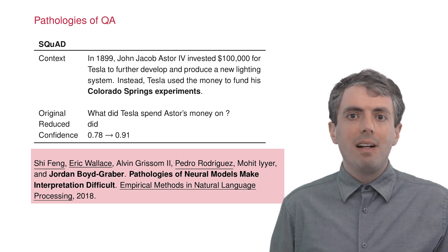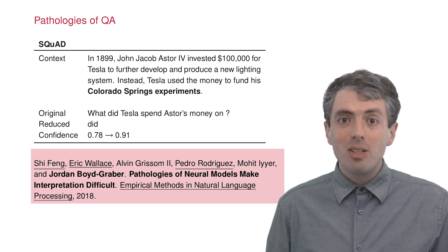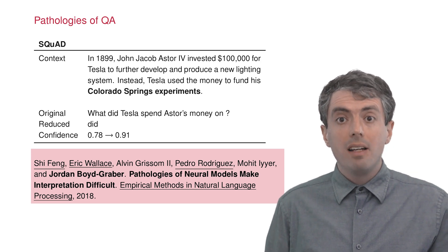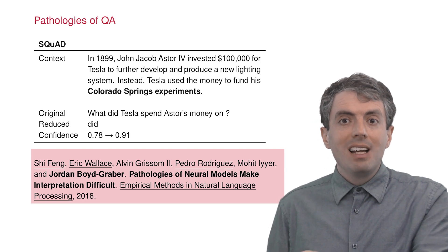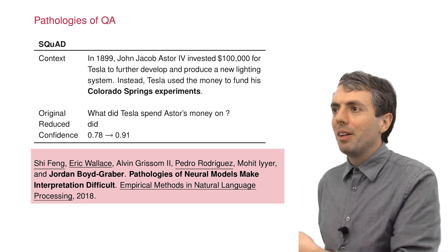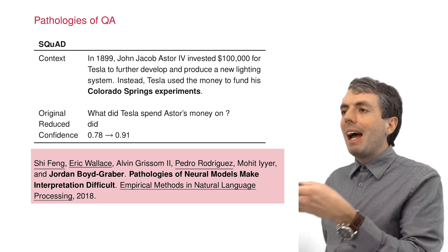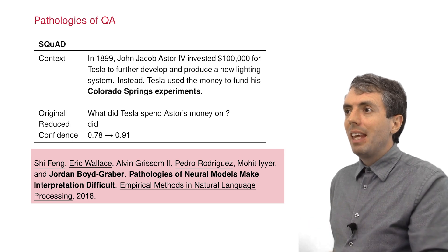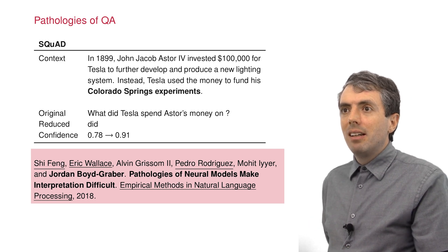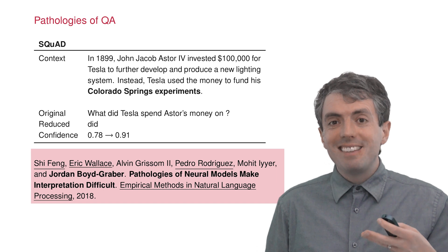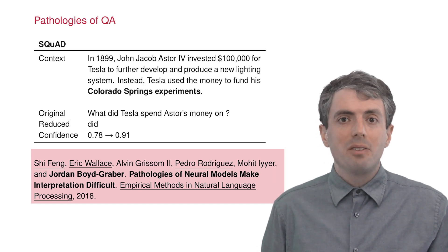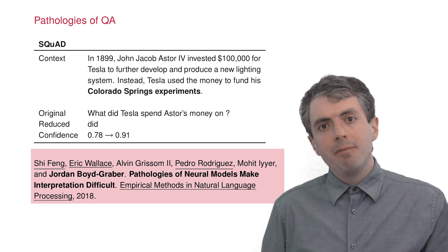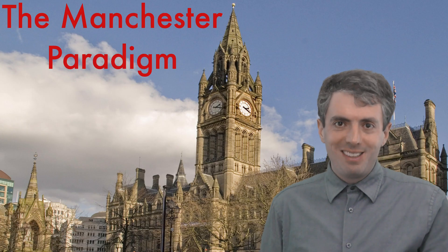Sometimes systems that work well on these datasets are actually pretty dumb. Natural Questions looks like another dataset, SQuAD, where we showed that the system learned stupid word association patterns. For example, if you asked a DID question in this context, it would just say 'the Colorado Springs experiments' — that is not a good answer. As an alternative to the Cranfield paradigm, we propose the Manchester paradigm.